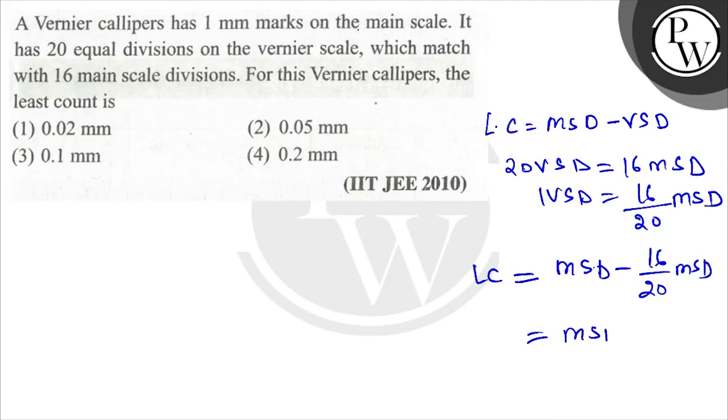This equals MSD times 4 by 20. So it is equal to MSD value, 1 mm, into 1 by 5. It is 0.2 mm.